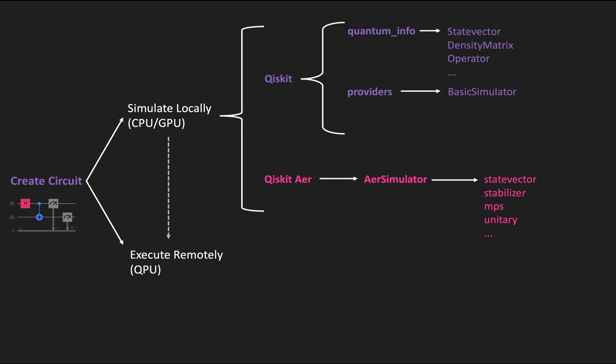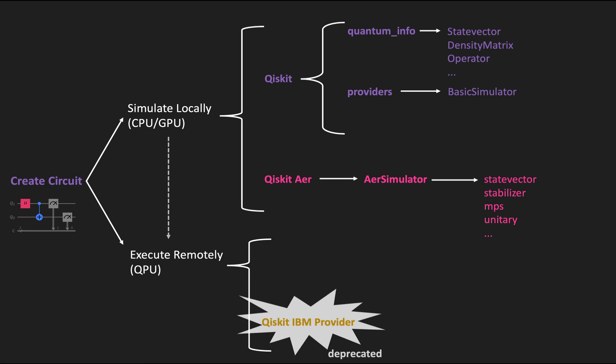In the past, once we were done with simulations, we would run using what was known as the Qiskit IBM Provider. Unfortunately, this is being deprecated, so we no longer have this option, which used to match really well what we would do in Qiskit and Qiskit Aer. What we're now expected to use is the Qiskit IBM Runtime, and Runtime uses something called primitives, which are slightly different from the way we used to execute circuits.